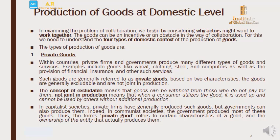Examples of private goods include wheat, clothing, steel, computers, as well as financial, insurance, and other services. Such goods are generally referred to as private goods based on two characteristics: they are excludable and not in joint production. Excludable means you can remove people from it — you can keep it exclusively for someone — and you cannot jointly produce it.